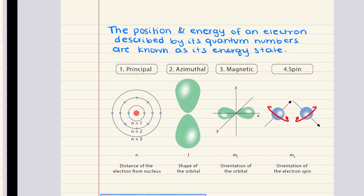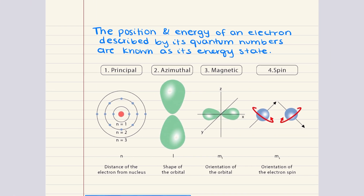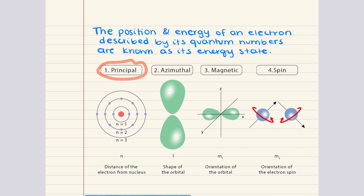From here, we can go back to our original notes and summarize. The principal quantum number n tells us the energy level or shell in which an electron is located. A higher value of n means a larger shell, which tells us that the electron is further from the nucleus and will therefore have increasing energy. It also determines the maximum number of electrons that can occupy a given shell.